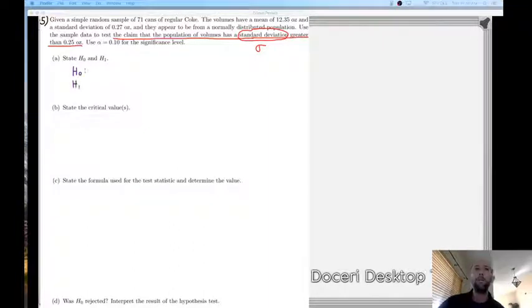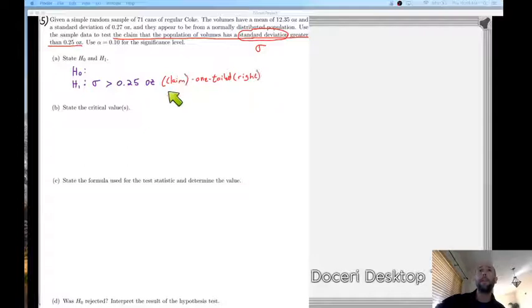So we can go through and state our null and alternative hypothesis, and we have that sigma is greater than 0.25 ounces. And again this is our claim.